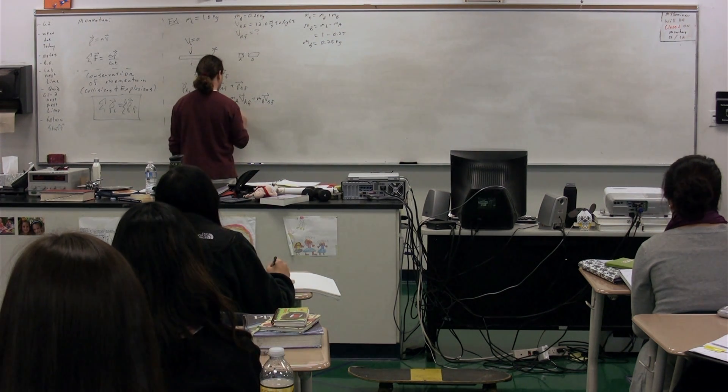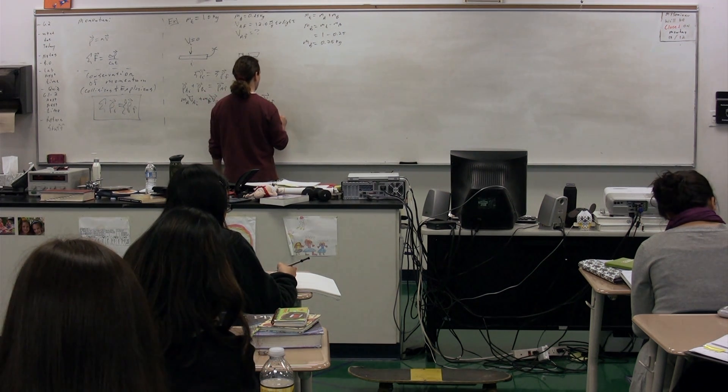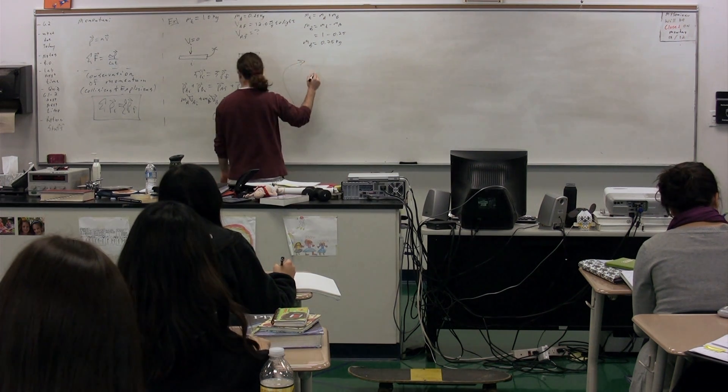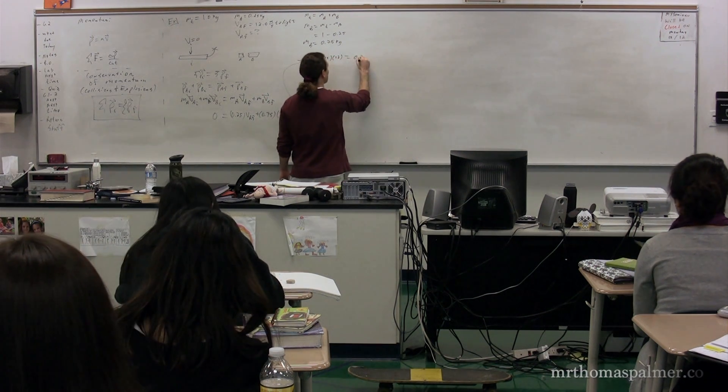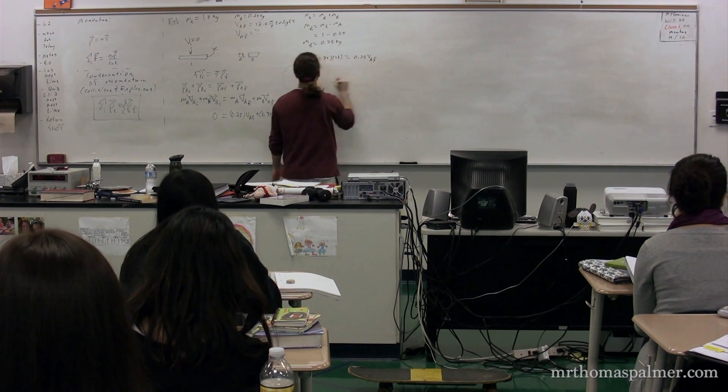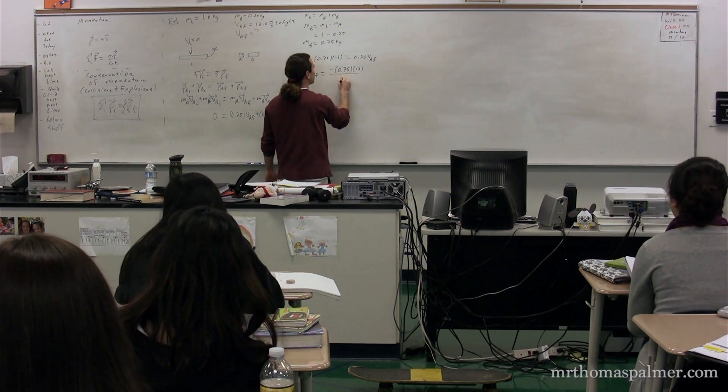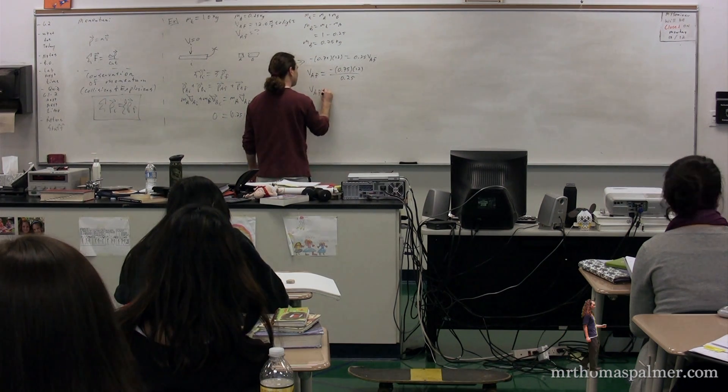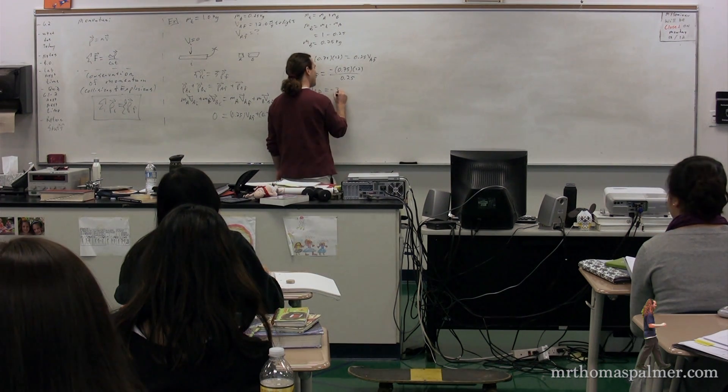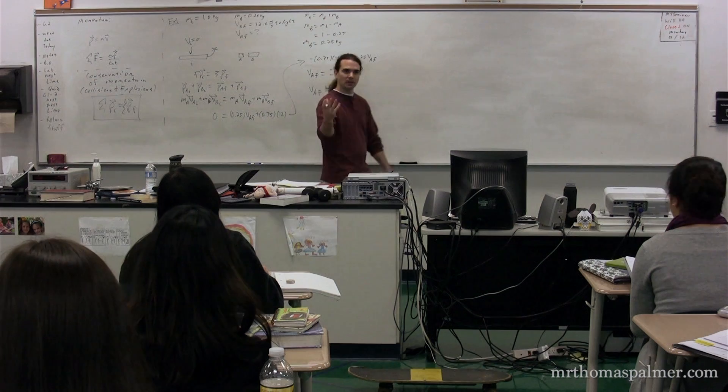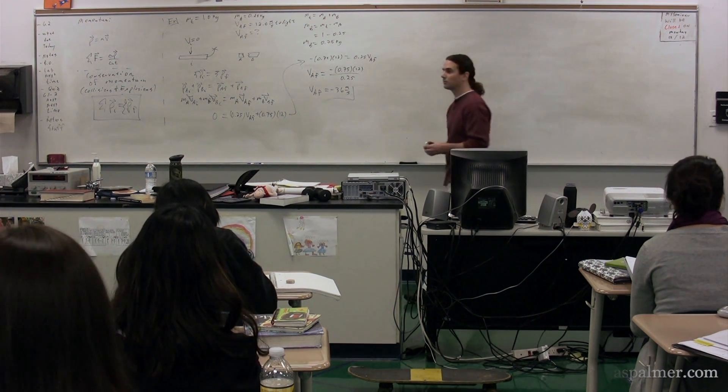The mass of A is 0.25, and we're looking for the velocity of A final. The mass of B is 0.75, multiplied by the velocity of B final, which is 12. From there, negative 0.75 multiplied by 12 equals 0.25 multiplied by the velocity of A final. Therefore, the velocity of piece A final equals negative 0.75 times 12 divided by 0.25, which is negative 36 meters per second. As you can see, it's negative because it's to the left, and the magnitude is greater than 12.